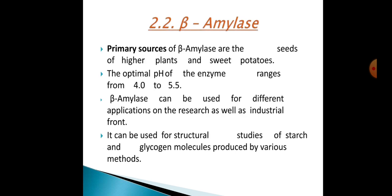The primary sources of beta-amylase are seeds of higher plants and sweet potatoes. Beta-amylase is also found in germinating seeds before germination. The optimal pH of these enzymes ranges from 4 to 5.5, and beta-amylase can be used for different applications in research as well as in industry.